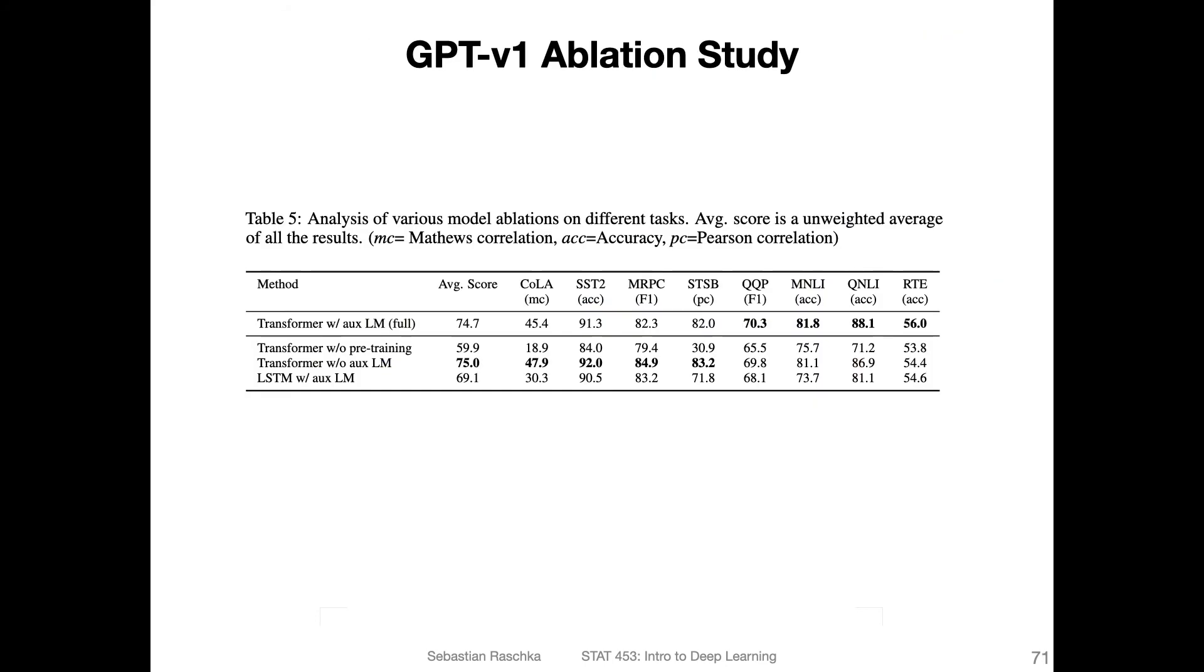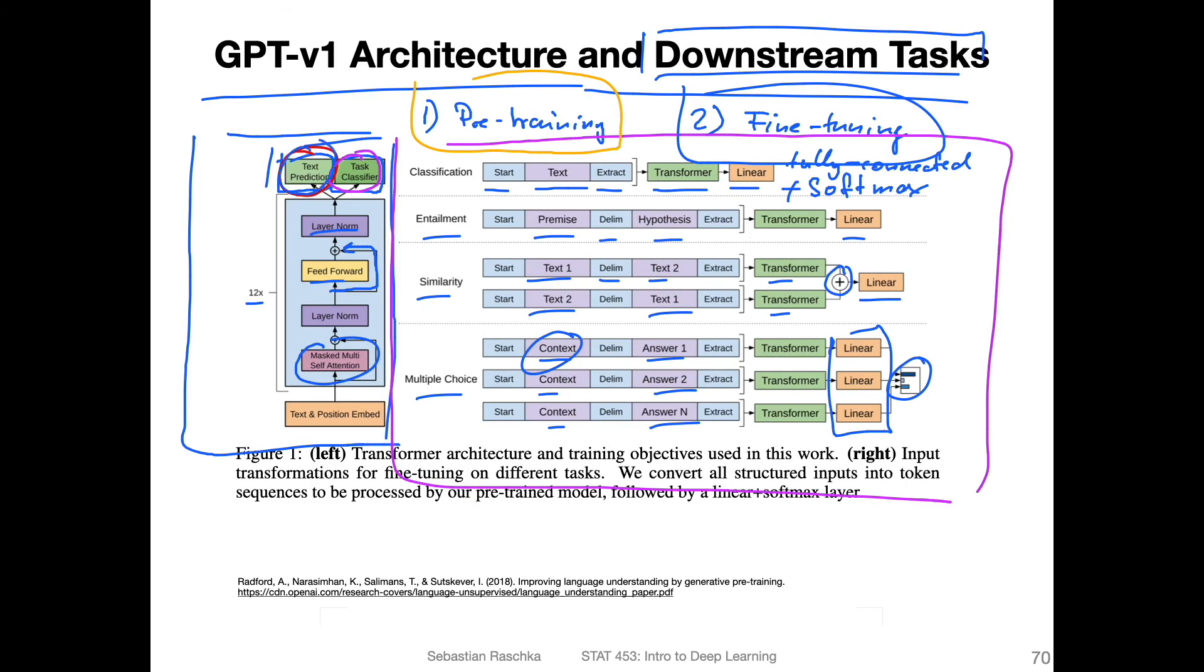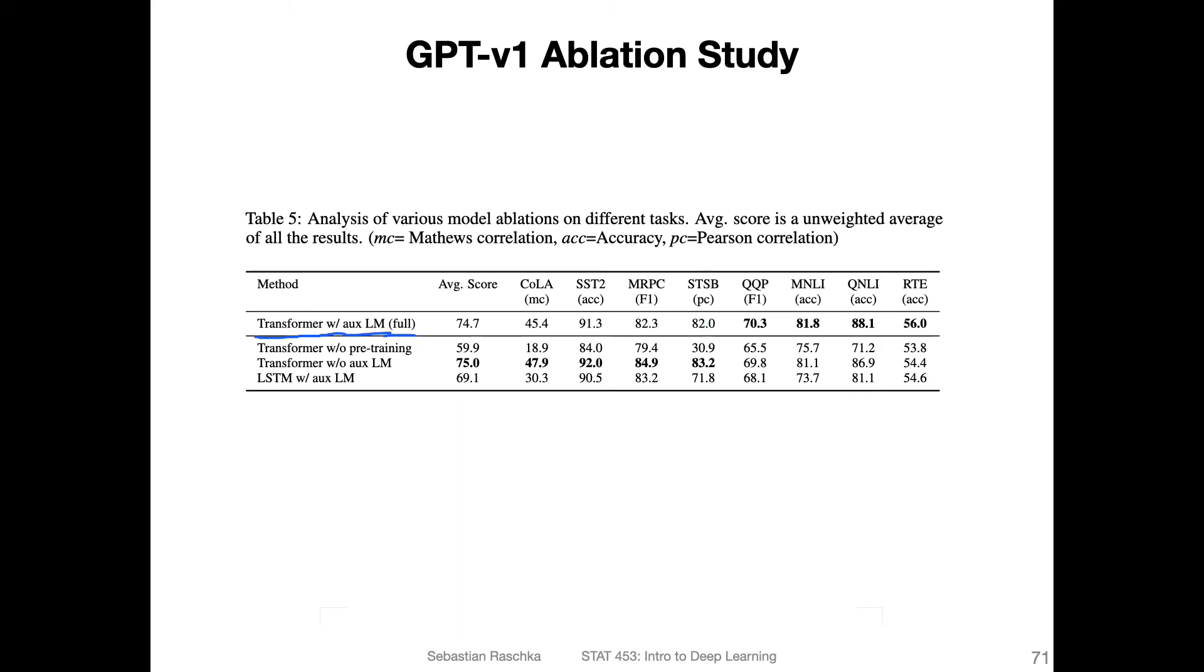Here they did an ablation study looking at whether the performance is better or worse if you remove the next word prediction when you do the fine-tuning. Here they call that the transformer with the auxiliary language model. That's the full model. The auxiliary language model is essentially this text prediction here. It gets pretty good performance, an average score of 74.7 that they computed here.